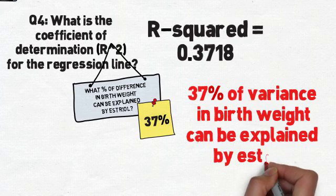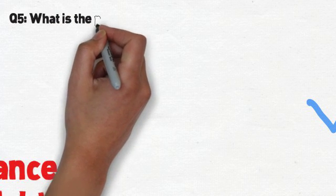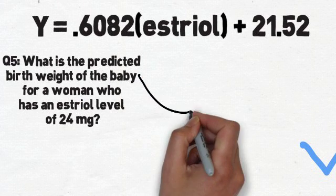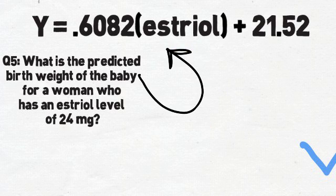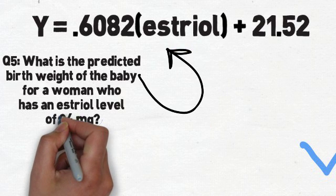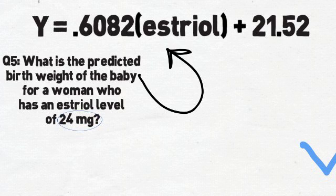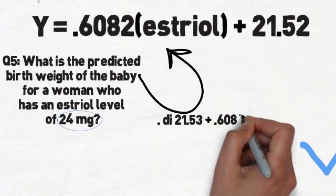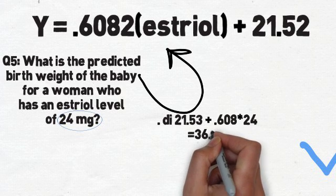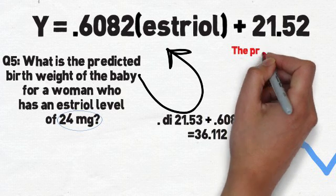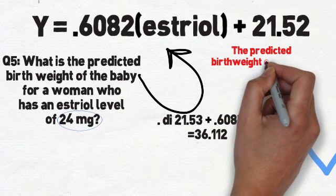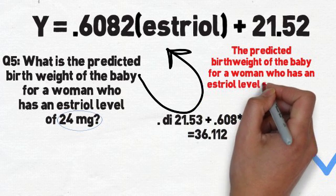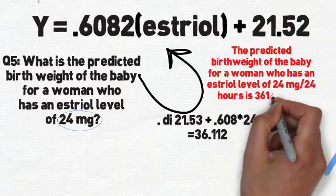Question 5 asks: what is the predicted birth weight of a baby for a woman who has an estriol level of 24 milligrams? Remember our equation: y = 60.82 × esterol + 21.52. Now we have an estriol level to plug in. If we want Stata to do the math, we type 'di 21.53 + .608 * 24' and we get 36.112. Our answer is that the predicted birth weight for a woman with an estriol level of 24 milligrams in 24 hours is 3612 grams.